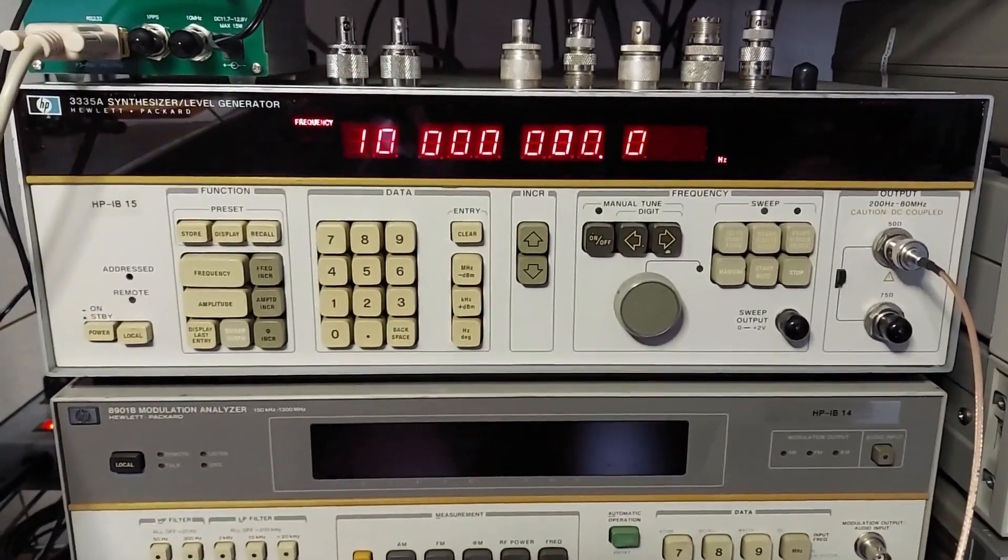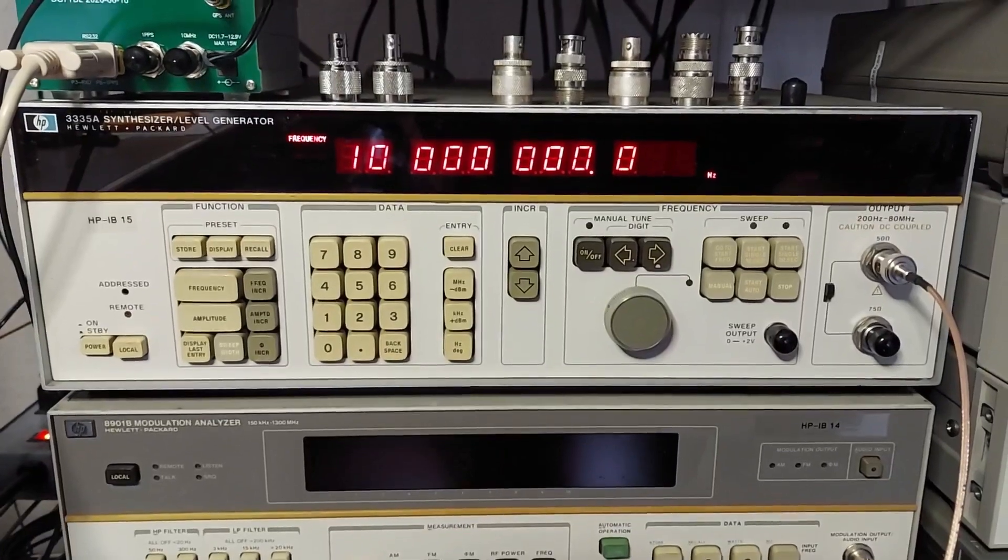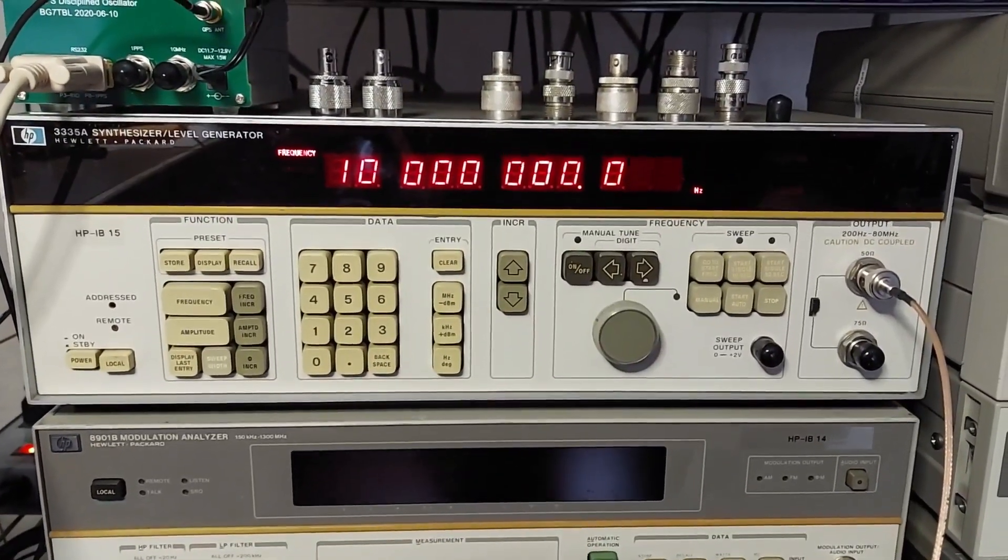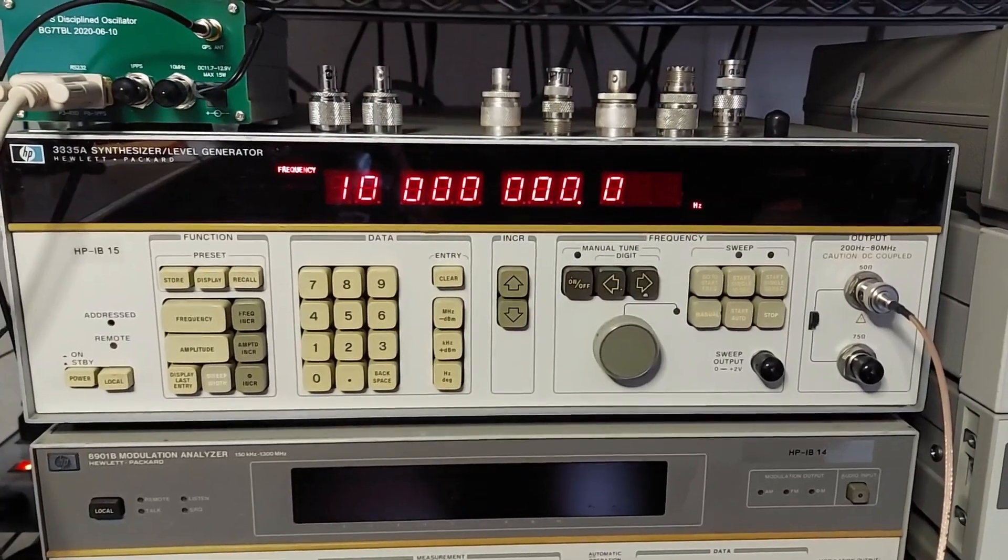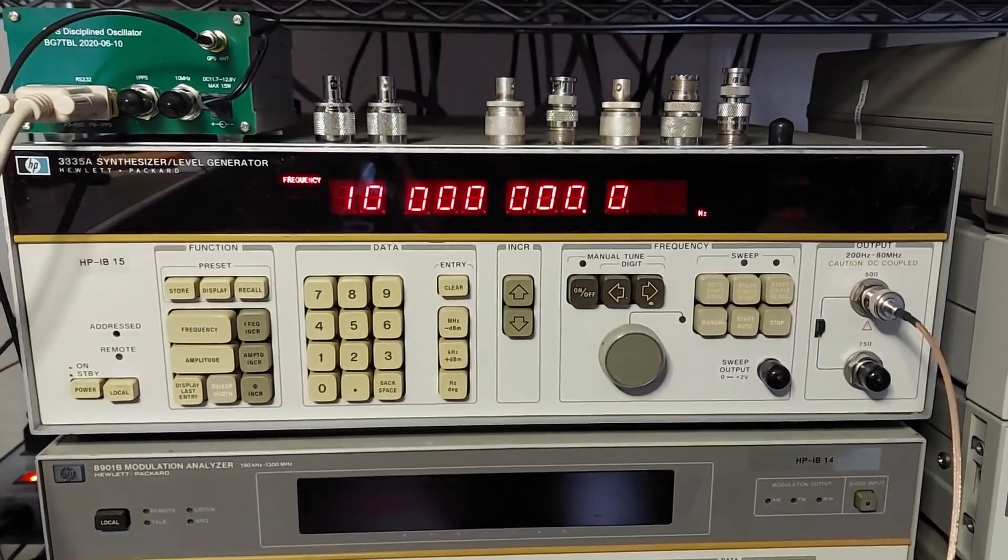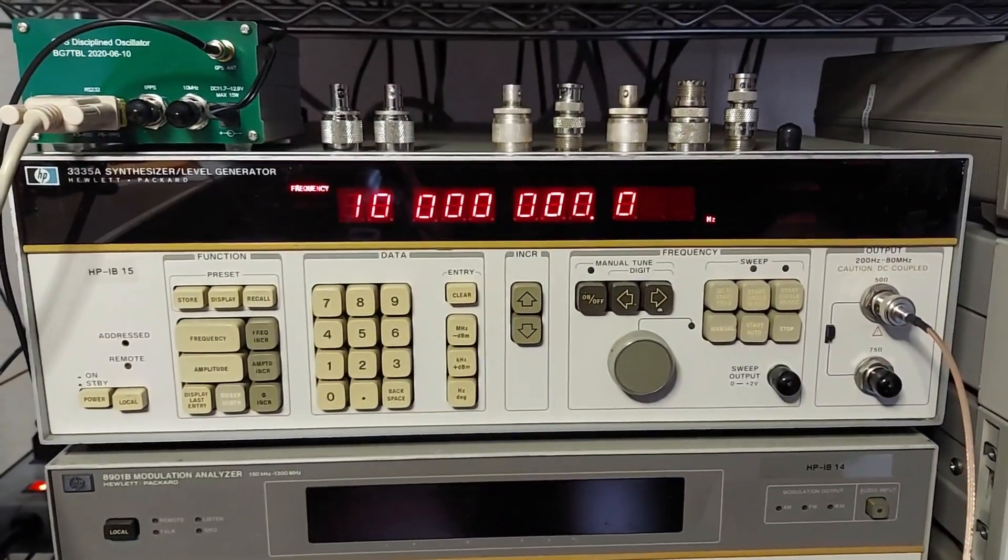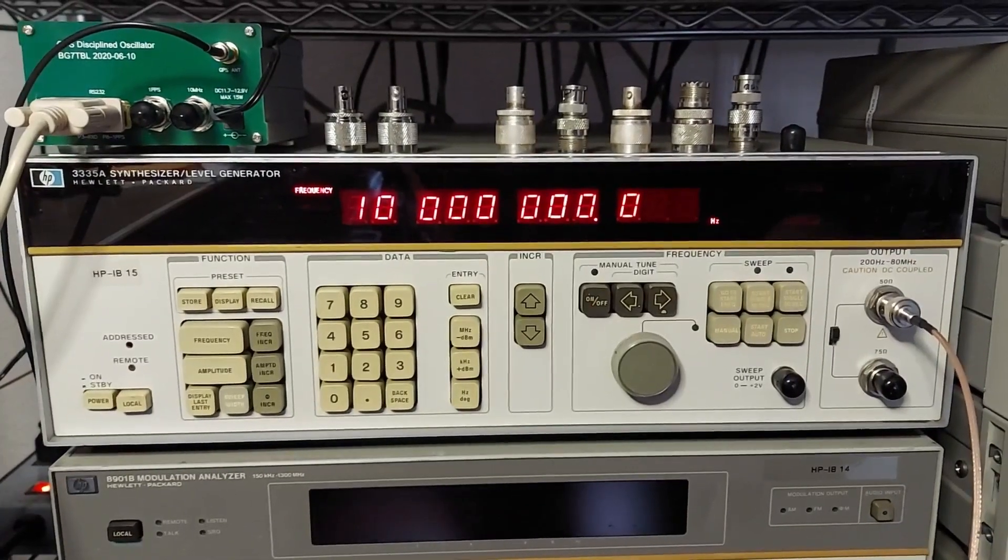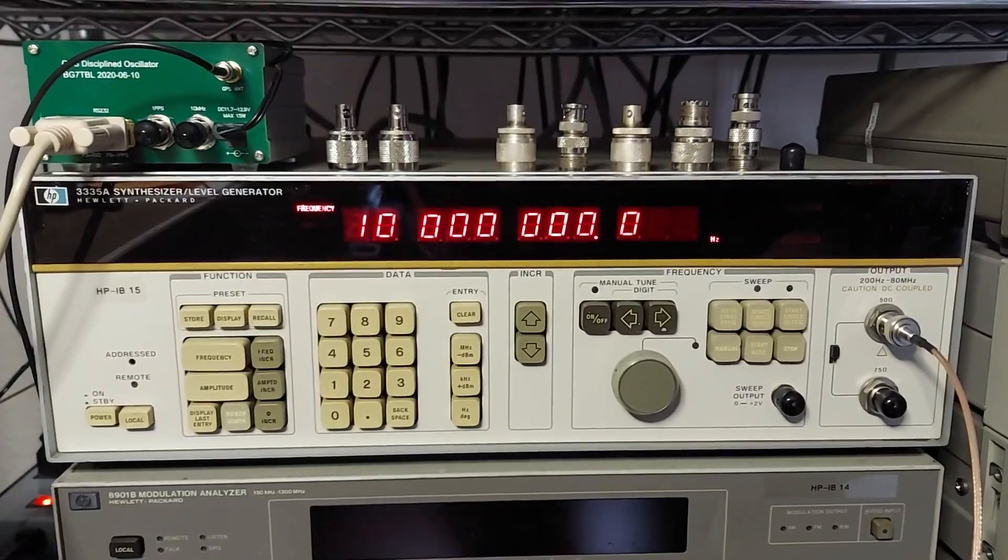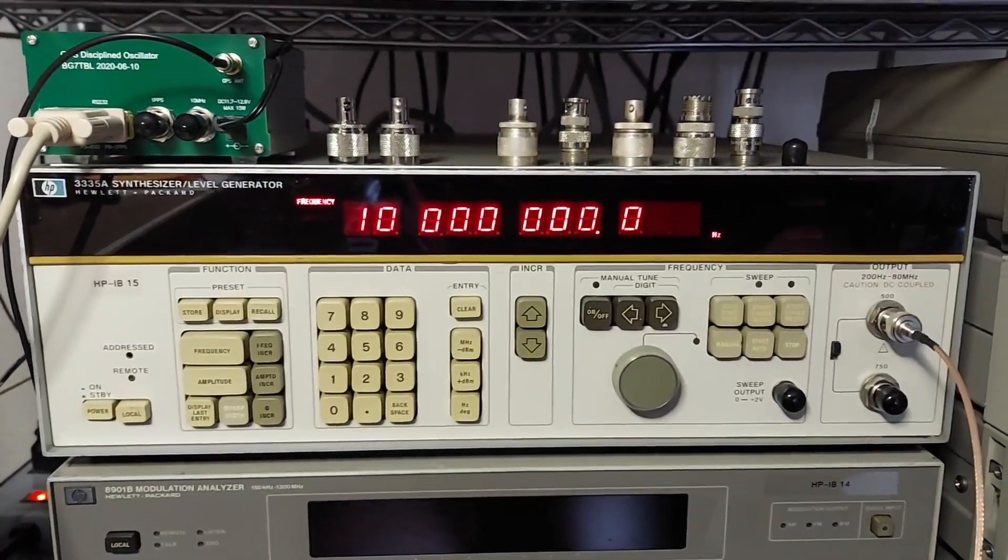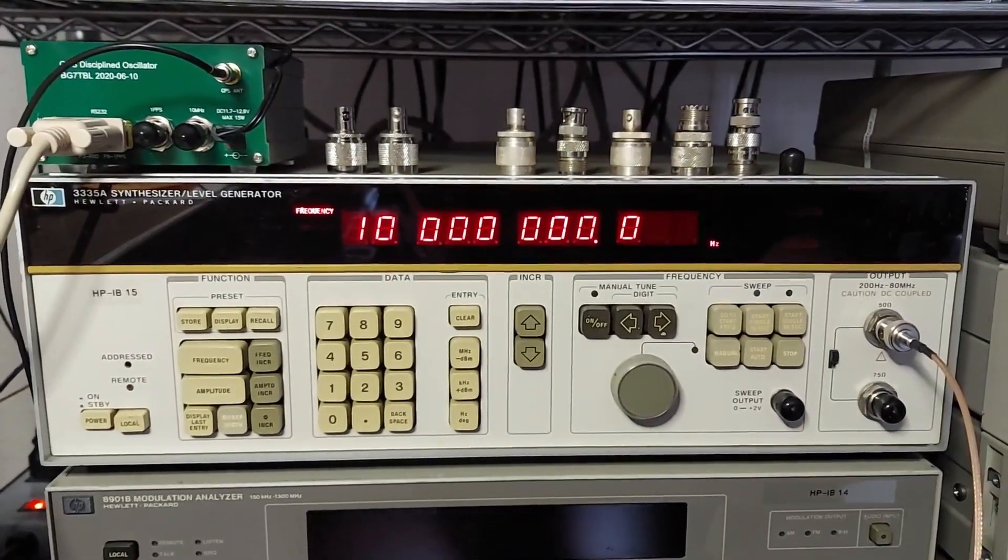Well good morning everybody. I want to do kind of like a part two now that I've had the thing in the rack. I've assigned it an HPIB address, seems to work just fine. I haven't had any issues or reoccurring issues, so I want to cover some of the other functions this thing does now that I've read the manual and didn't try to just fumble my way through it like I did on the first one.